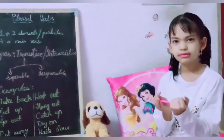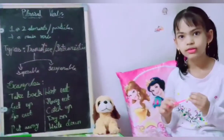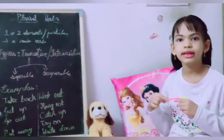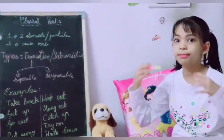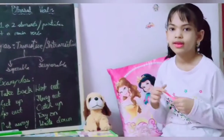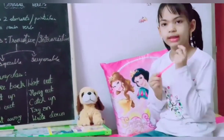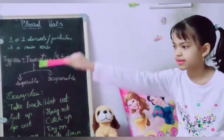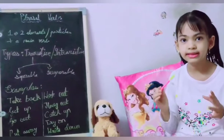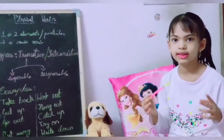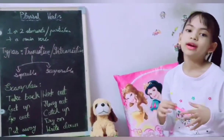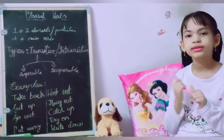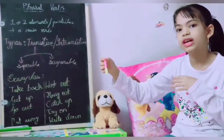Most importantly, we need to know what the phrasal verb actually means. Just like 'look up to' means to admire somebody — not to literally look up. For example, 'put away' — you're not physically putting something away in a vague sense; you're setting something neatly in its place. Like 'Please put away your clothes.' This is separable, so we can also say 'Please put your clothes away.'